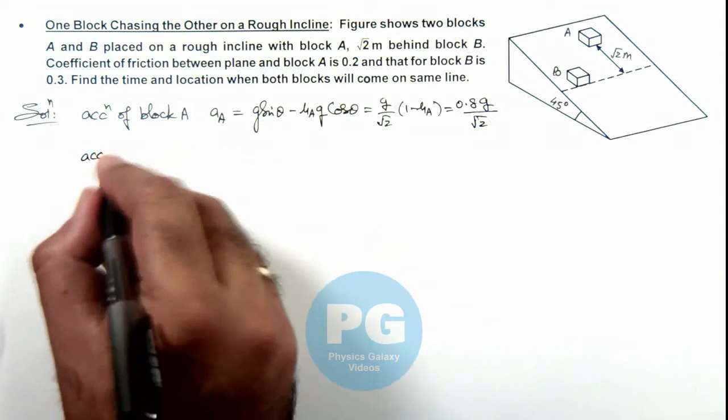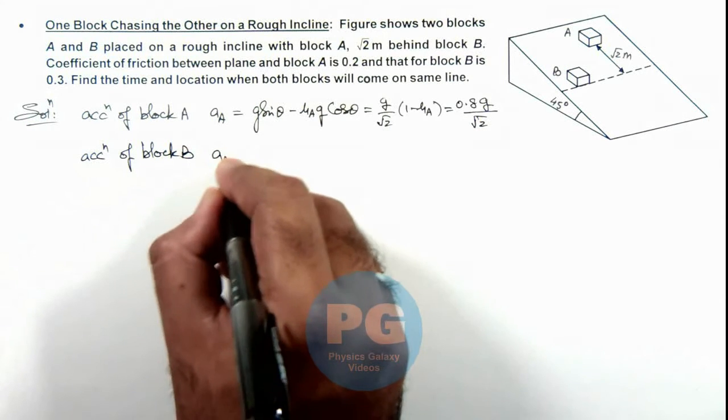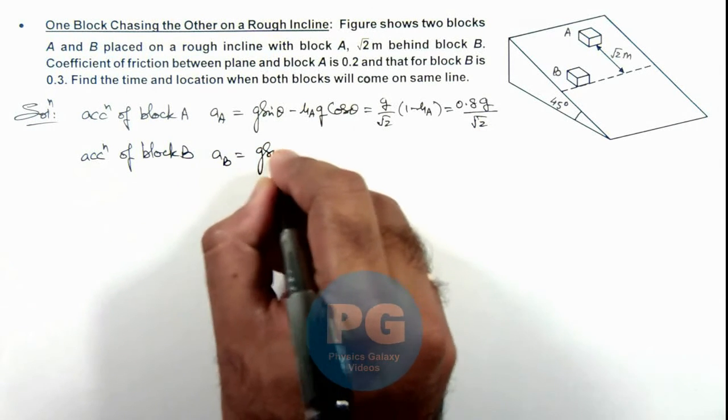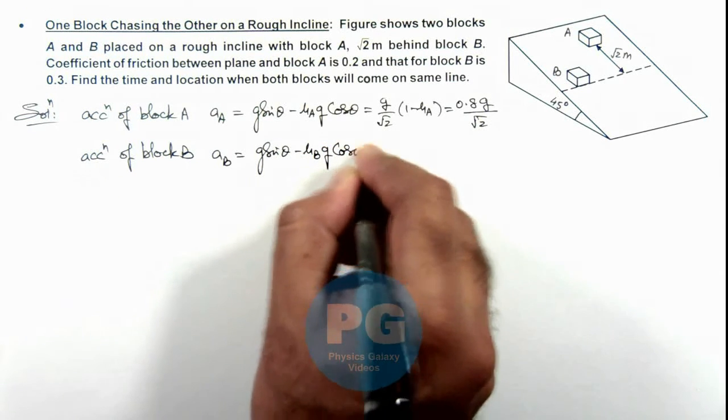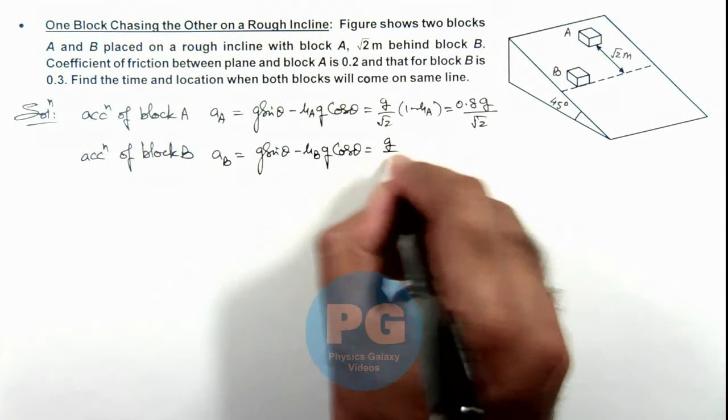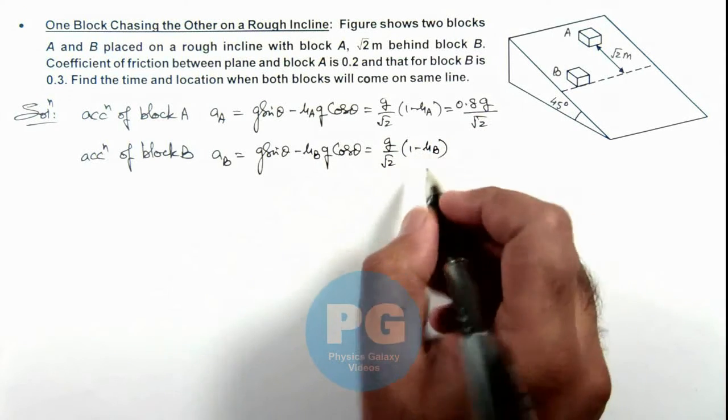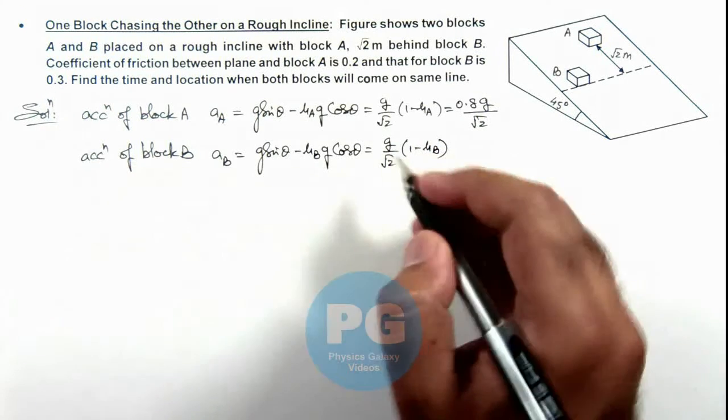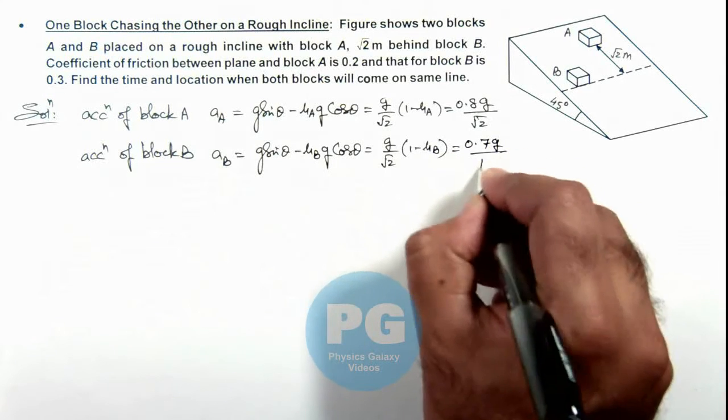Similarly we can write acceleration of block B as aᵦ equals g sin θ minus μᵦ g cos θ. So this can be written as g/√2 multiplied by 1 minus μᵦ. And we are given the friction coefficient between block B and incline is 0.3, so this is 0.7 g/√2.